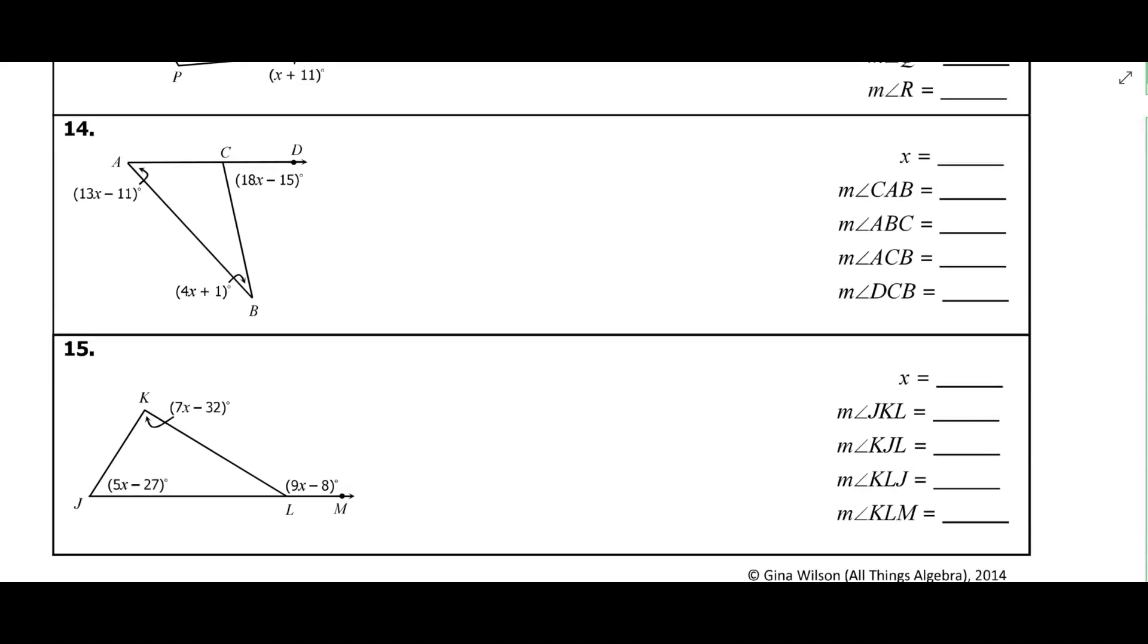The first thing I always recommend that you do is take a look at the diagram and see what's going on. So we can see here I've got an exterior angle here for angle DCB, and then I've got two non-adjacent interior angles or remote interior angles. Let's see, I want to find angle X and then I want to find all four of these other angles.